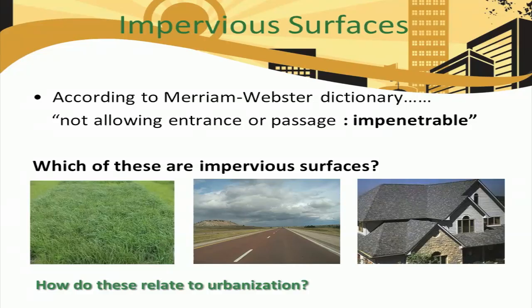A large concern of urban sprawl on the environment deals with the interruption of a local hydrological cycle by impervious surfaces. Impervious is defined as not allowing entrance or passage — something which is impenetrable. Of the three surfaces shown, which ones are impervious, and which ones are pervious? How do these surfaces relate to urbanization? Take a moment to think about these questions and share your thoughts with others in your class. Try to think of other surfaces or materials which are impervious. You may pause the video here to discuss.